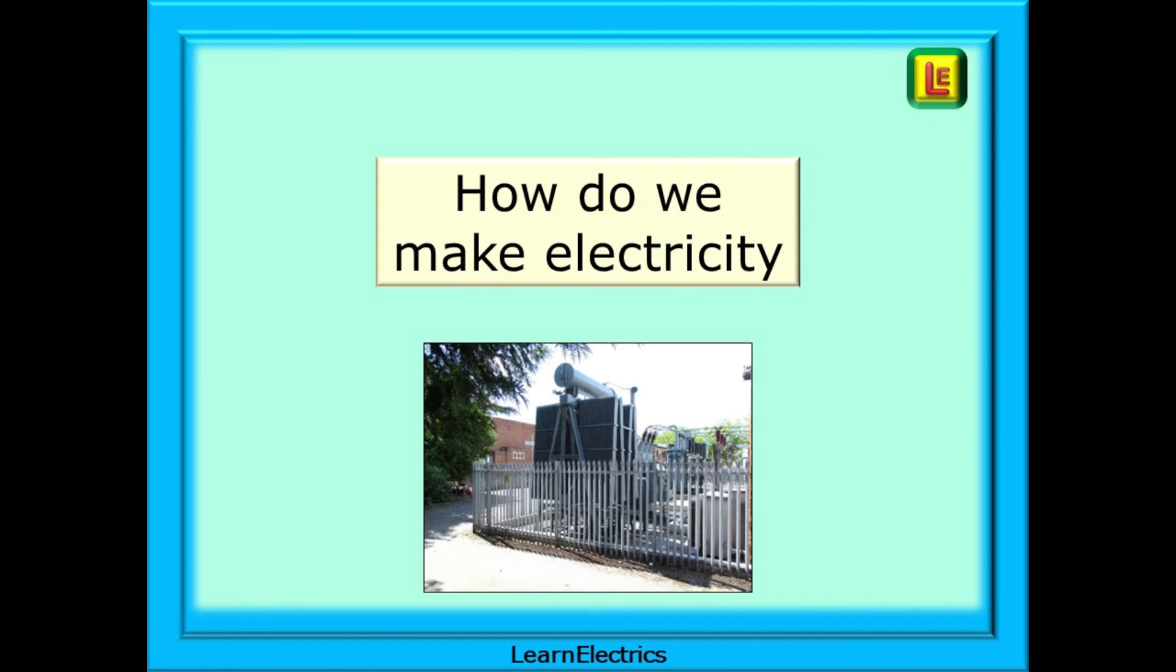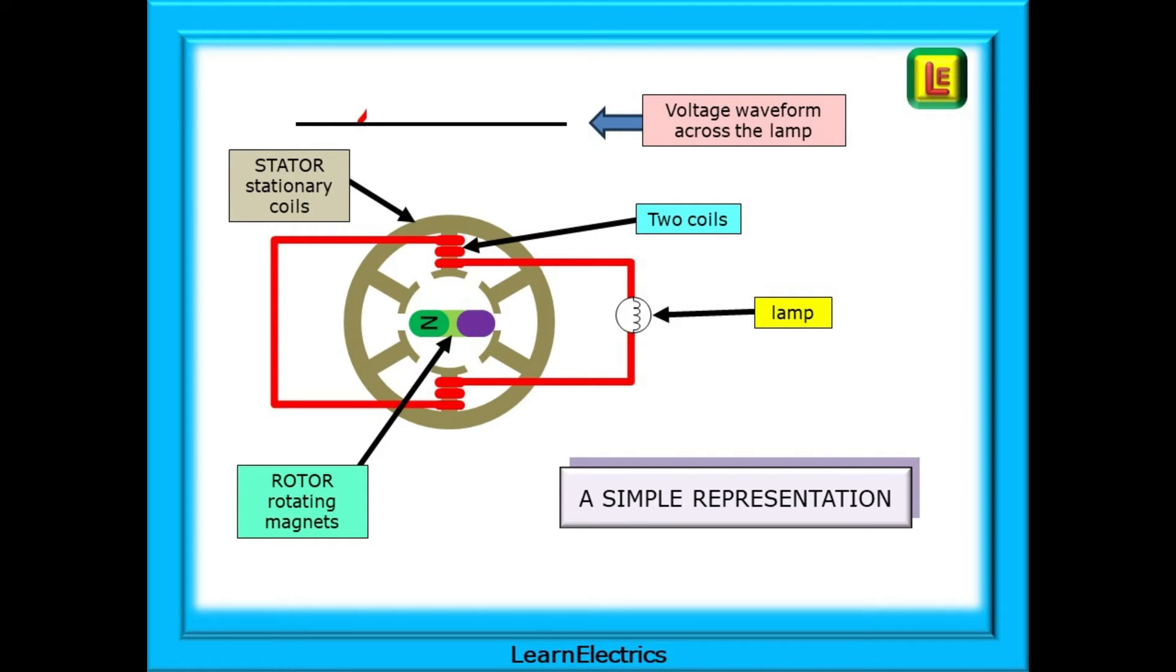We should begin with the question asking how we make electricity. We're all familiar with the idea of power stations, turbines and generators, but what is actually happening inside the generators? This is a very basic drawing of a generator. It looks very similar to an electric motor and so it should. A generator converts rotary motion from the rotating turbine shaft into electricity, whilst the motor changes electricity back into rotary motion.